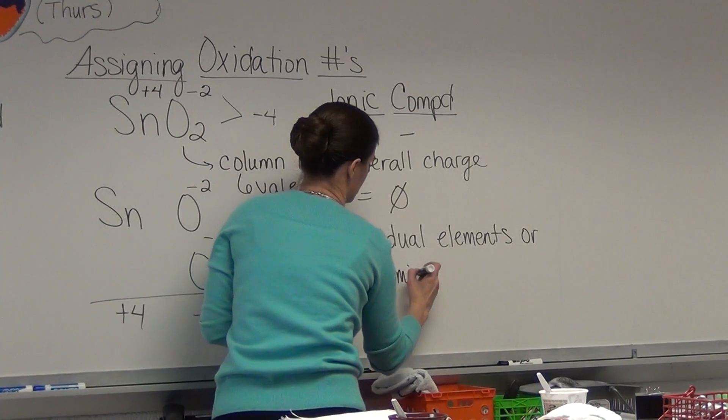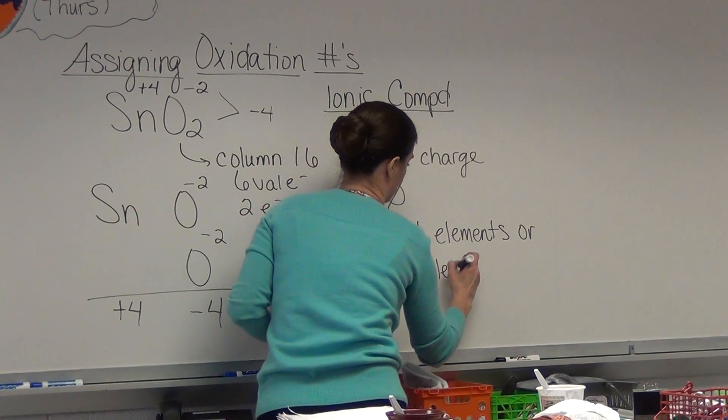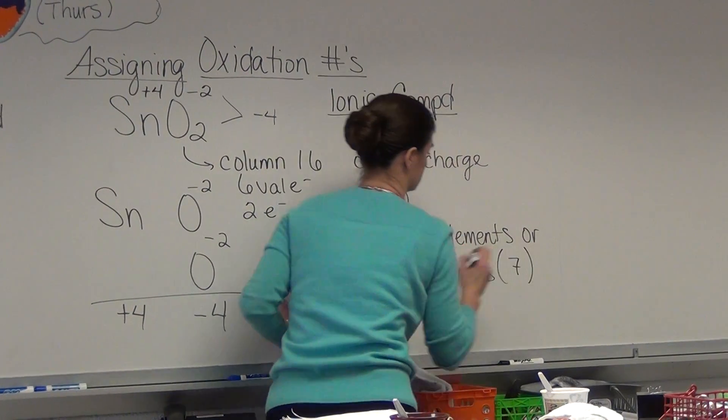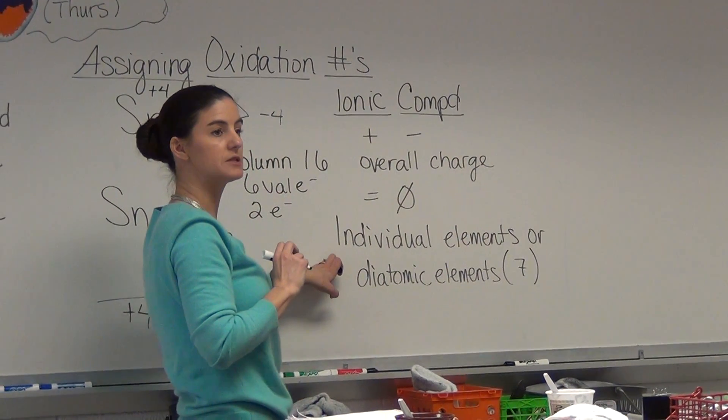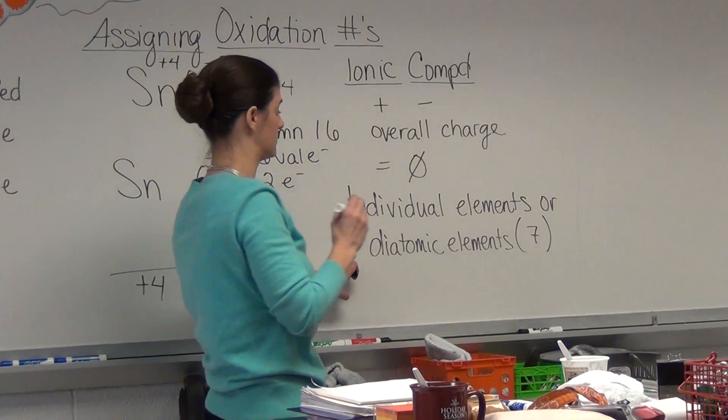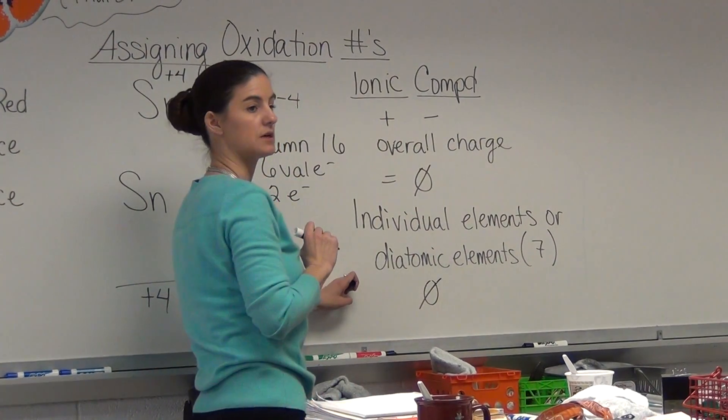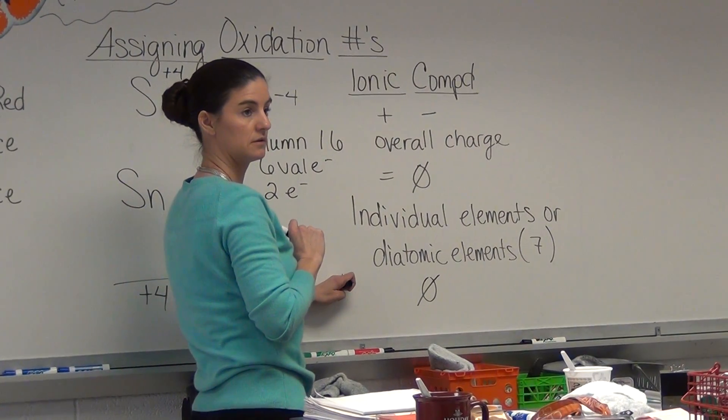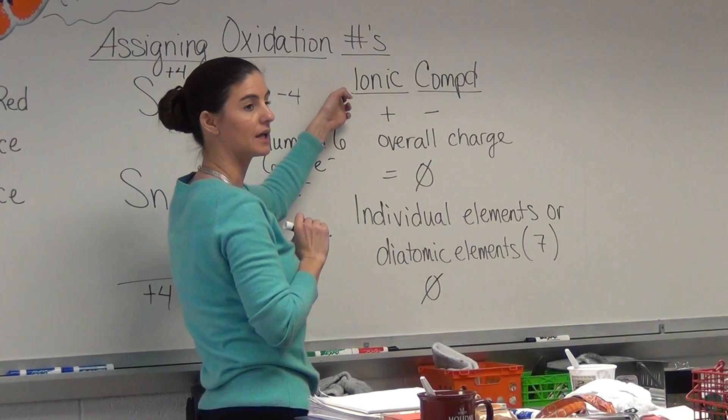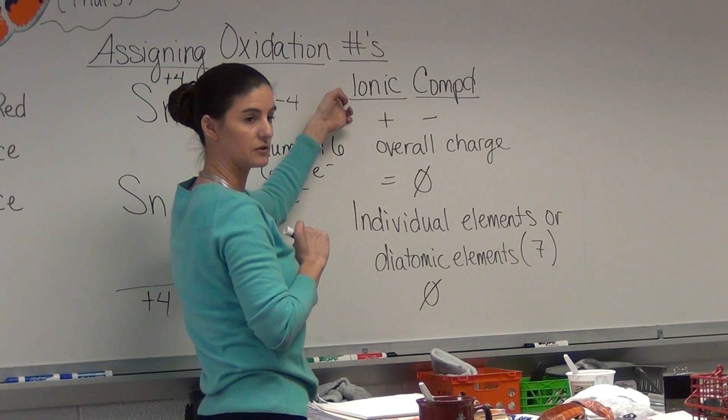How many diatomic elements do we have? Seven. There's seven of them. Individual elements or diatomic elements, if they're not in a compound, have a charge of zero. So it's not until they get into an ionic compound that they have a charge.